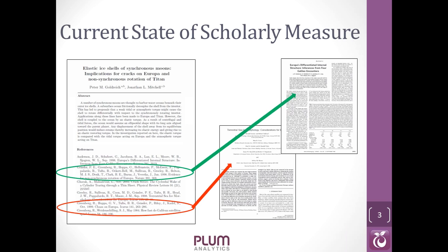The way we measure scholarship is the way we've done it for 50 years when things were in print. As a researcher, I publish something in an article that is hopefully in a high-impact journal, and then I hope people subsequently cite my work in hopefully high-impact journals. We know there are a lot of problems with this, but it's really all we've had.